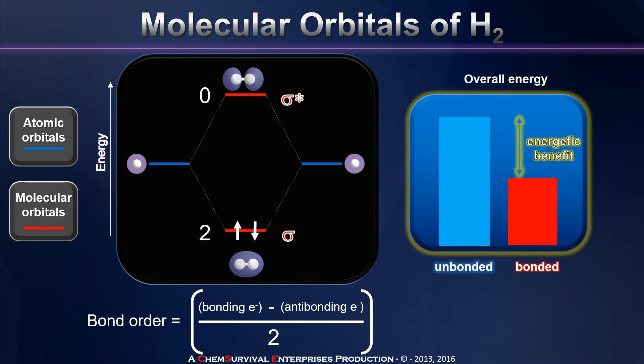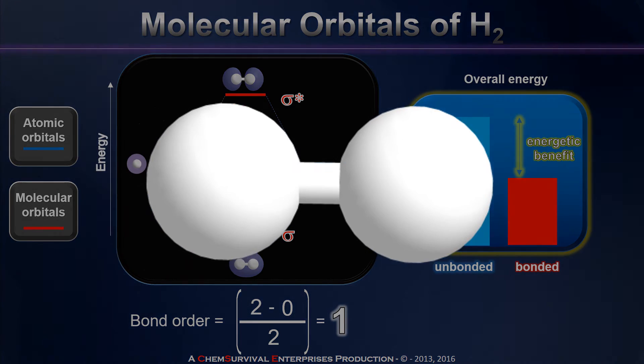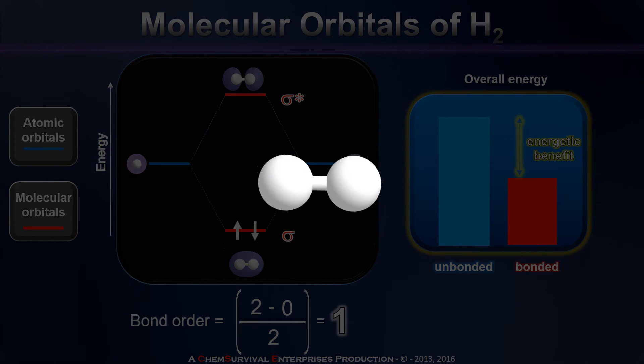In our example here of hydrogen, we have two bonding electrons and we have no antibonding electrons. Consequently, our equation tells us that we expect two hydrogen atoms to get together and form a chemical bond with an order of one. In other words, a hydrogen molecule should have a single bond and that is in fact exactly what we see.